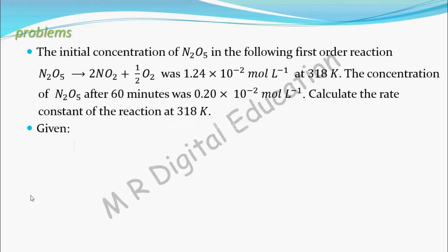See what is the problem once again. Given for this reaction, initial concentration of N2O5 was 1.24 × 10^-2 mol per liter. And he measured the concentration of N2O5 again after 60 minutes, he found it as 0.20 × 10^-2 mol per liter. And he is asking for the rate constant.